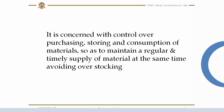There are three stages of material control: purchase control, storage of material (inventory control), and issue of materials (issue control). These control systems aim at controlling materials at two levels, namely quality controls and financial controls.